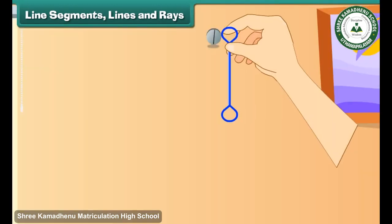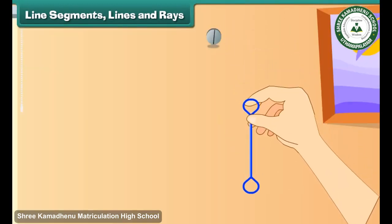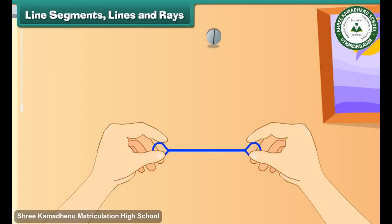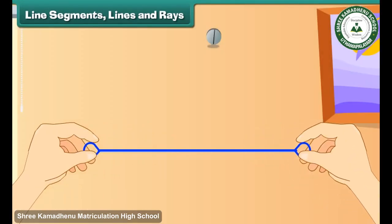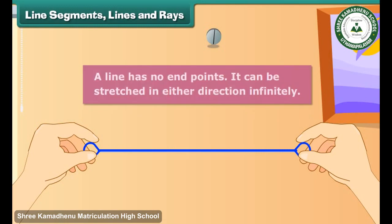Let us now remove the nail and stretch the rubber in the other direction. We now have a line. A line has no end points and can be stretched in either direction infinitely.